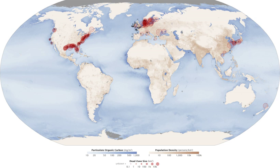Dead zones are reversible, though the extinction of organisms lost due to their appearance is not. The Black Sea Dead Zone, previously the largest in the world, largely disappeared between 1991 and 2001 after fertilizers became too costly to use following the collapse of the Soviet Union and the demise of centrally planned economies in Eastern and Central Europe, and fishing has again become a major economic activity in the region. While the Black Sea clean-up was largely unintentional, the UN has advocated other clean-ups by reducing large industrial emissions. From 1985 to 2000, the North Sea Dead Zone had nitrogen reduced by 37% when policy efforts by countries on the Rhine River reduced sewage and industrial emissions of nitrogen. Other clean-ups have taken place along the Hudson River and San Francisco Bay.